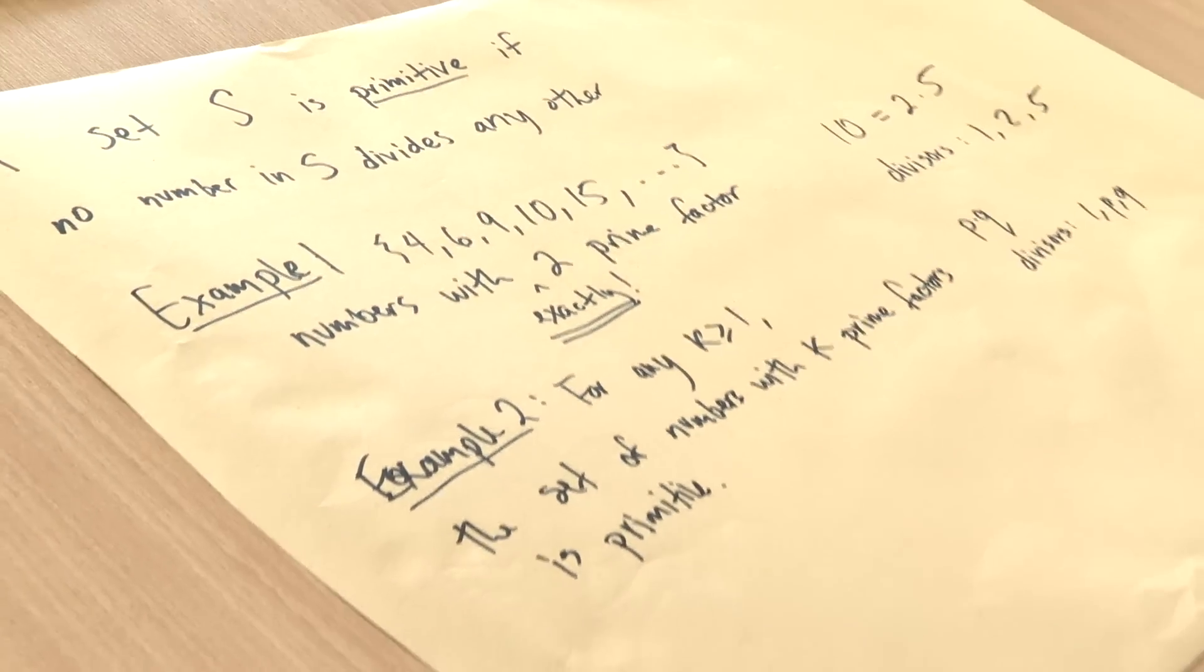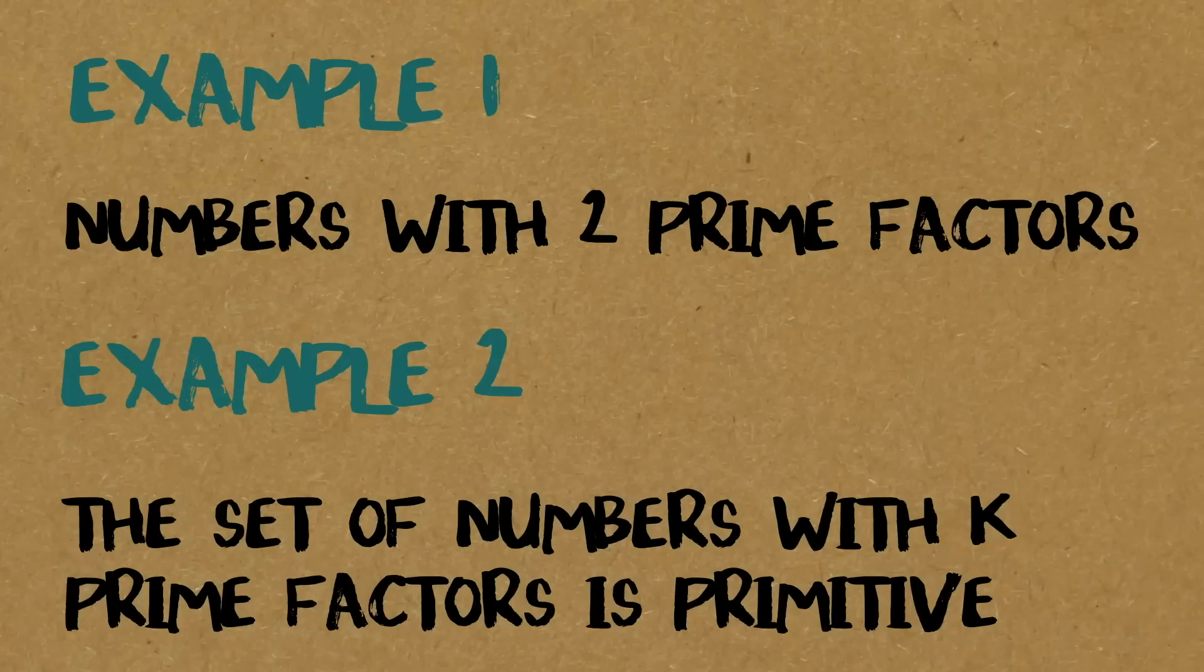We've produced another family, so example two: for any k, the set of numbers with k prime factors is primitive. So all the numbers with three prime factors, all the numbers with... Exactly. Why are they called primitive? Primitive is the idea of a basic building block. At the end of the day, these are just English words that have been chosen, but this is meant to convey some idea of these being a very simple definition that's containing some of the basic structure.